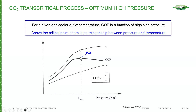Here's a fundamental point about transcritical systems: for every gas cooler outlet temperature — which depends on ambient temperature — your coefficient of performance is going to be a function of high-side pressure. The controls on the high side are always trying to optimize for the highest coefficient of performance. The highest COP isn't always achieved at a lower or higher pressure — it depends. And I'll explain that further.